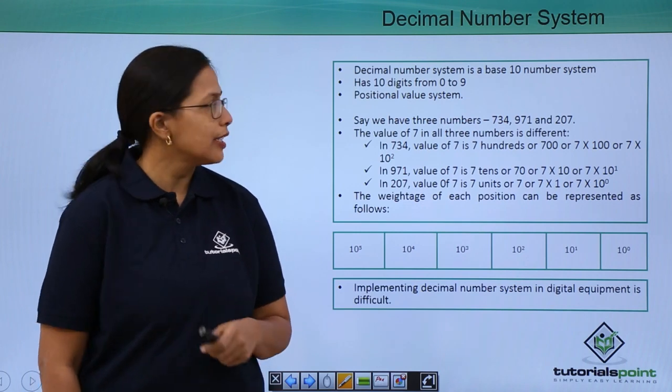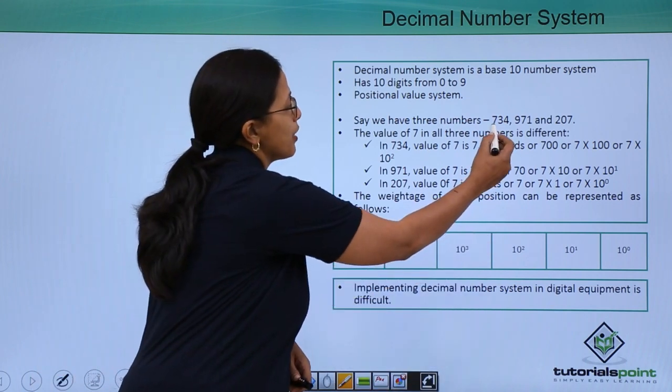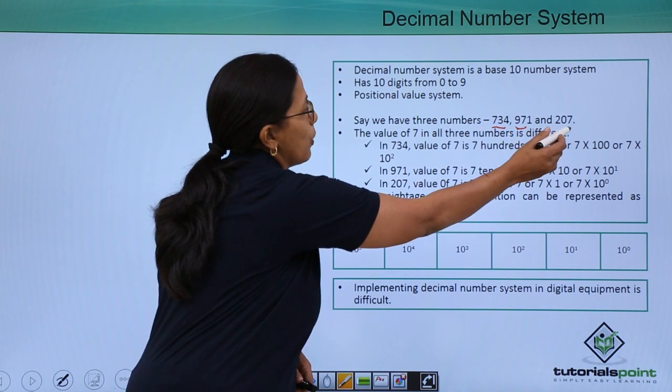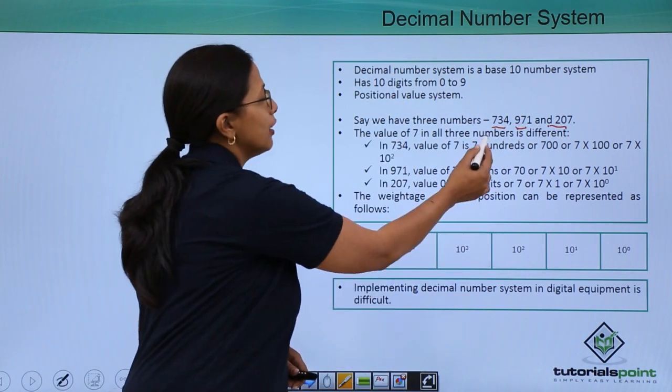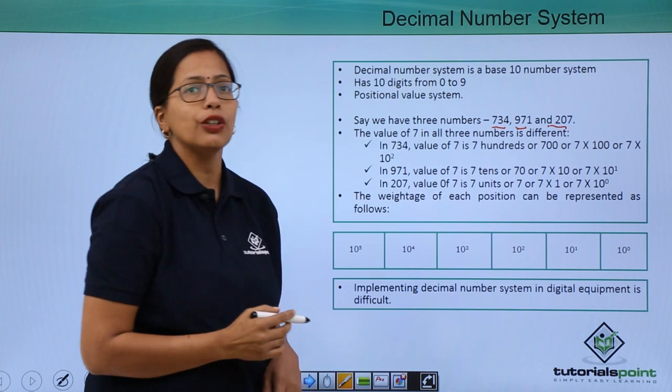Let me take an example and tell you. See, there are three numbers, 734, 971 and 207. As you can see, the digit 7 occurs in all three of them.